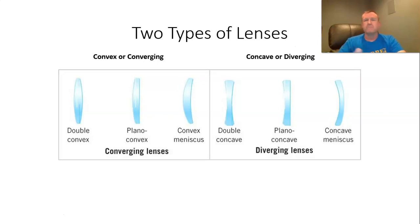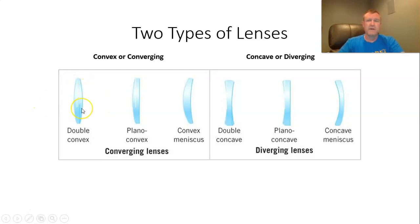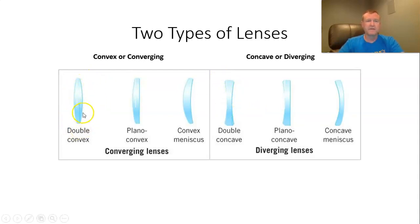That wasn't done just to confuse you — there is a reason for it. Looking at a double convex lens from either side, it's bending out towards you, that's why it's convex. The double concave, if you look from either side, it's bending away from you like a cave — hence the name concave. It just so happens that the convex lens converges light and the concave lens diverges light, just the opposite of what we had with mirrors.